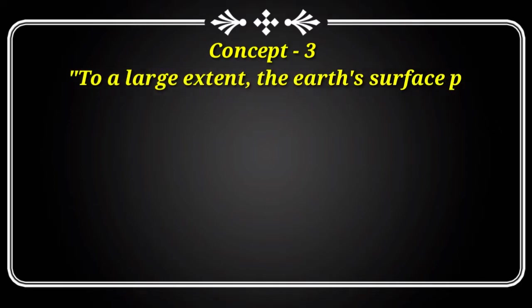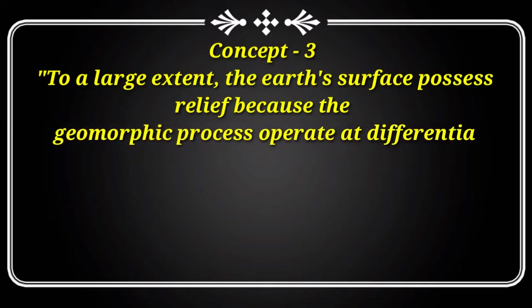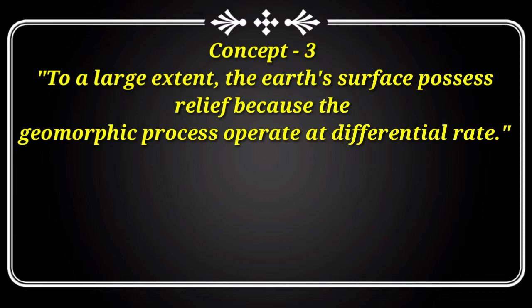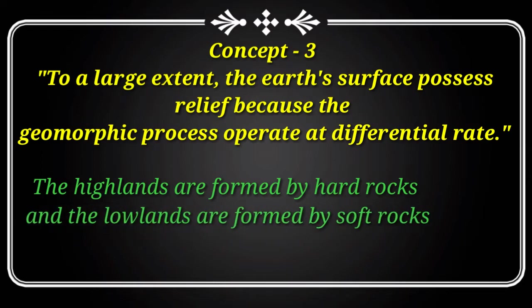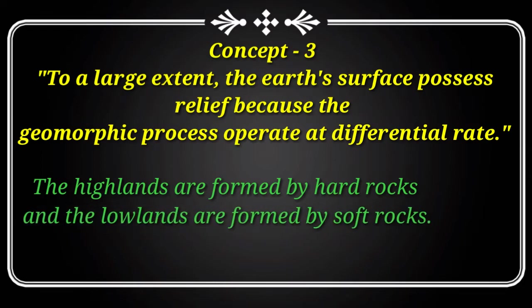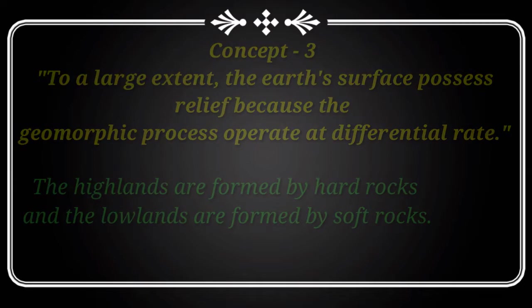Coming to the third concept: to a large degree, the earth's surface possesses relief because geomorphic processes operate at different rates. Various types of relief features on the earth's surface are formed by endogenetic and exogenetic processes. The process of gradation varies from place to place due to lithology and deposition of rock layers. Highlands are formed by hard rocks and lowlands by soft rocks. Factors like temperature, moisture, altitude, topographic configuration, and vegetation cover are also related to structure and lithology.